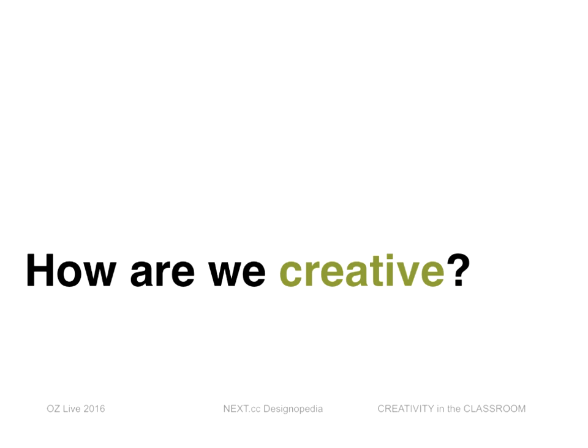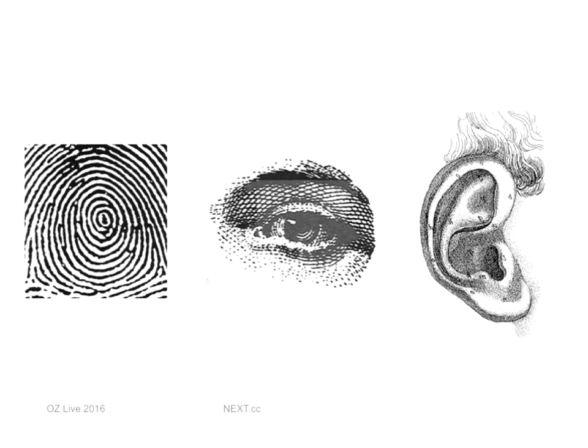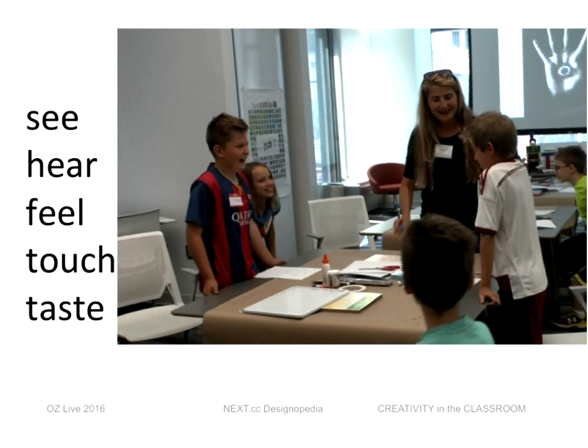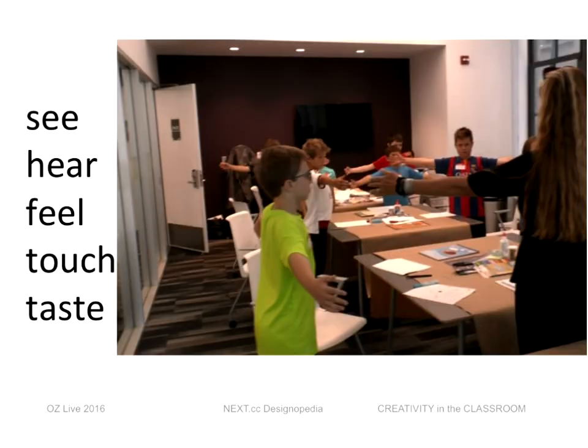An easy question for kids is: how are we creative? With kids it's easy to introduce the five or six senses and talk about how touch, sight, hearing, and tasting all help us be creative. The first thing they did was trace their hand, and I showed that great Dada image of the all-hearing, seeing, feeling, tasting hand — so they get to put their earlobes on their fingertips. We talked about how we learn and how we can be creative.